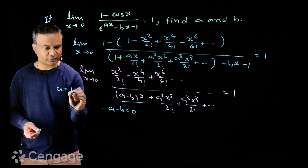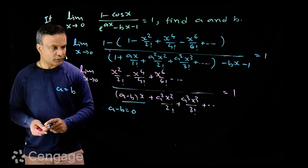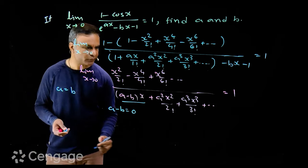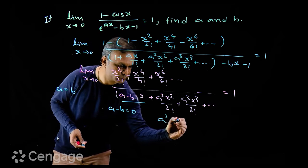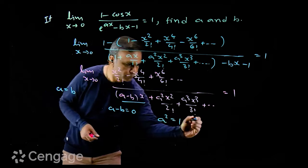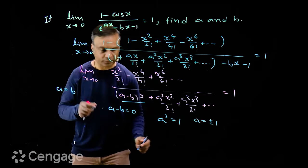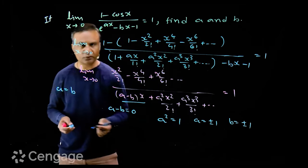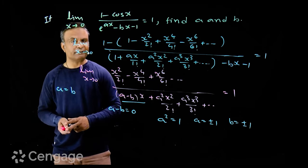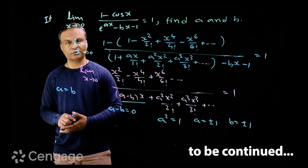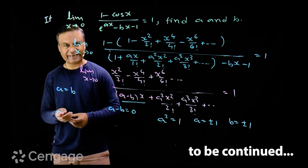So a minus b is equal to 0, which means a is equal to b. Then the limiting value will be 1/2 upon a²/2, or a² is equal to 1. So we have the value of a is equal to plus or minus 1, and from this we have b is equal to also plus or minus 1. When a equals plus 1, b equals plus 1, and when a equals minus 1, b equals minus 1. So we have two sets of values of a and b.